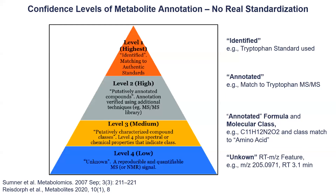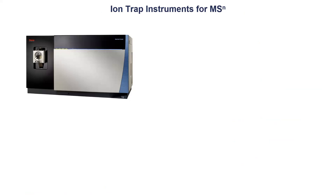At lower confidence levels, you really don't know what the compound is. At level 3, for example, you get a molecular formula and maybe the molecular class, so you at least know which chemical group it belongs to. At level 4, you know the retention time - you know the feature - but you don't know what it actually is. It's important to know this when you publish a paper so people understand your confidence in annotating those compounds. There's a difference between 'identified' and 'annotated' - with identified, I know what it is; with annotated, it might be this compound but I'm still not 100% sure.